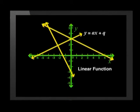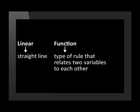Any formula that can be written in the form y equals ax plus q can be represented by a straight line graph. We call this family of graphs linear functions. Sure! That's quite a difficult name. Not really! Linear simply means in a straight line and a function is a type of rule that relates two variables to each other.